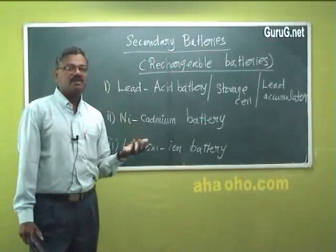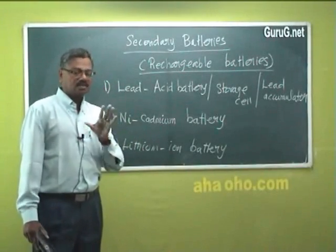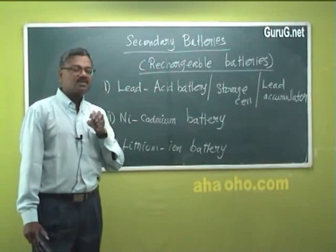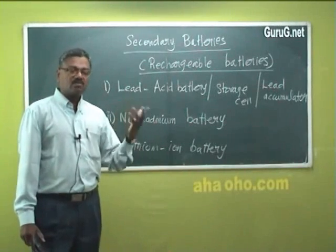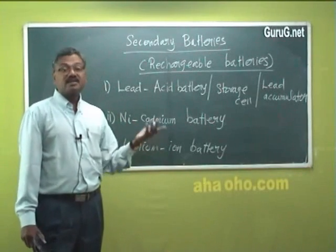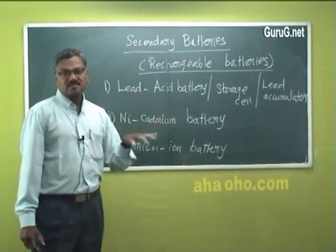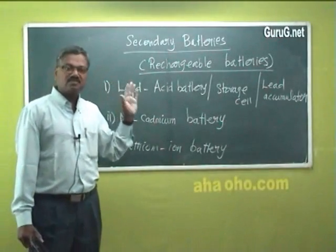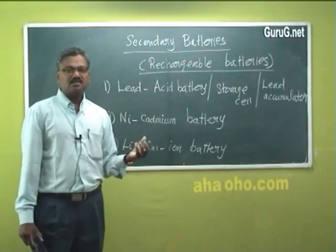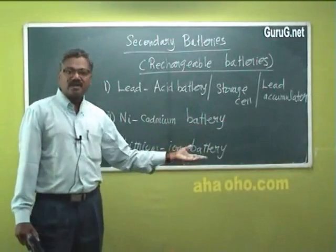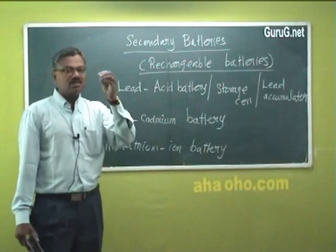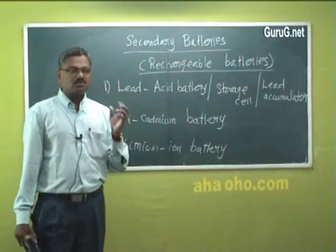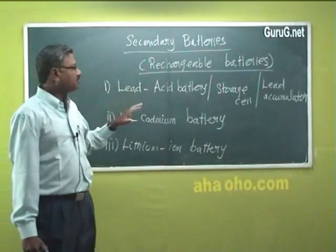When the reactants react in the cell, they are converted into products with the release of electrical energy. This works as an electrochemical cell. This electrochemical cell can be recharged and converted into an electrolytic cell by passing electricity. Once you pass electricity, the reverse reactions take place, and the products formed are converted back to reactants with the consumption of electrical energy from an external source.